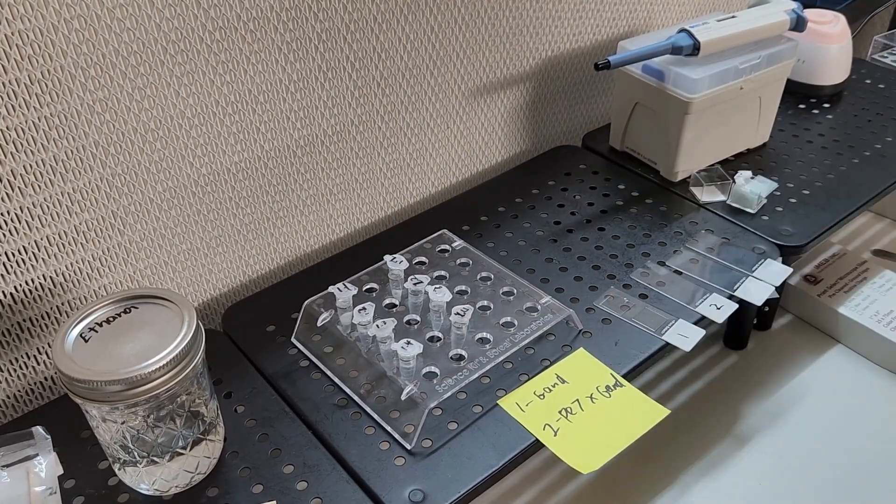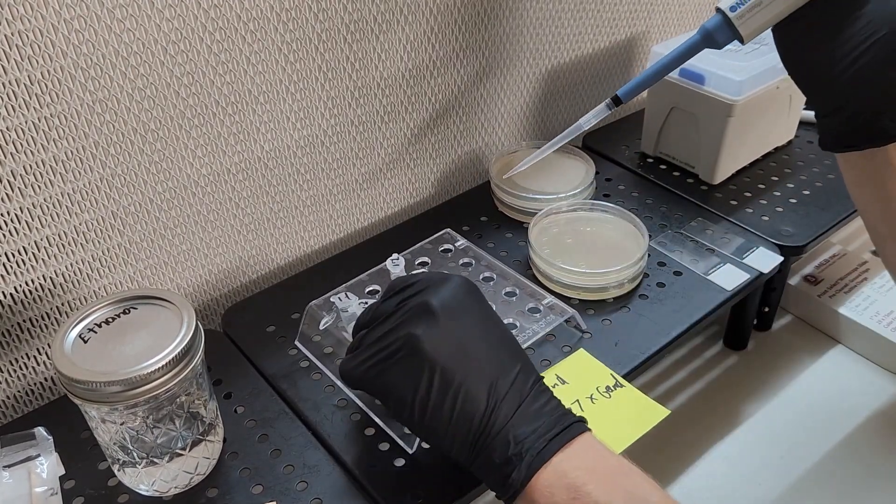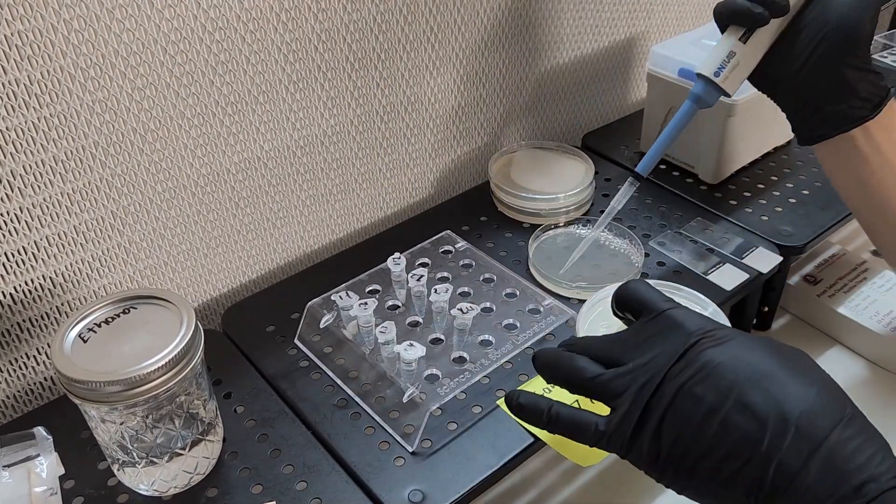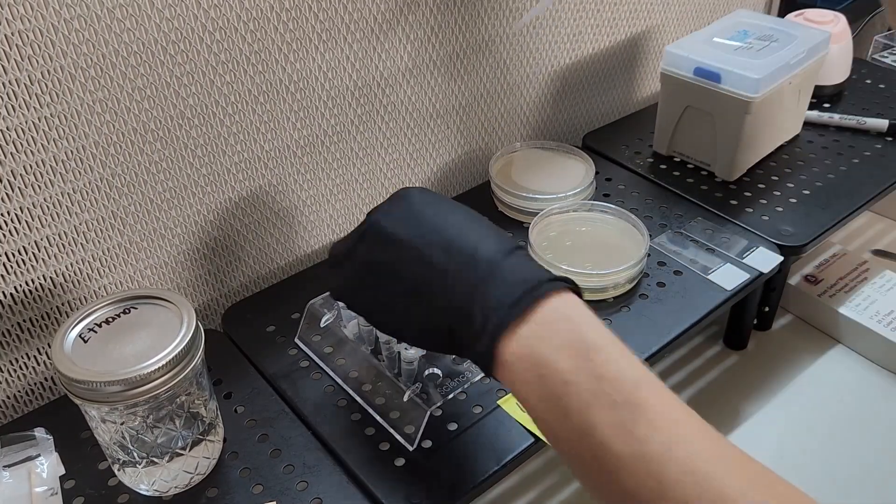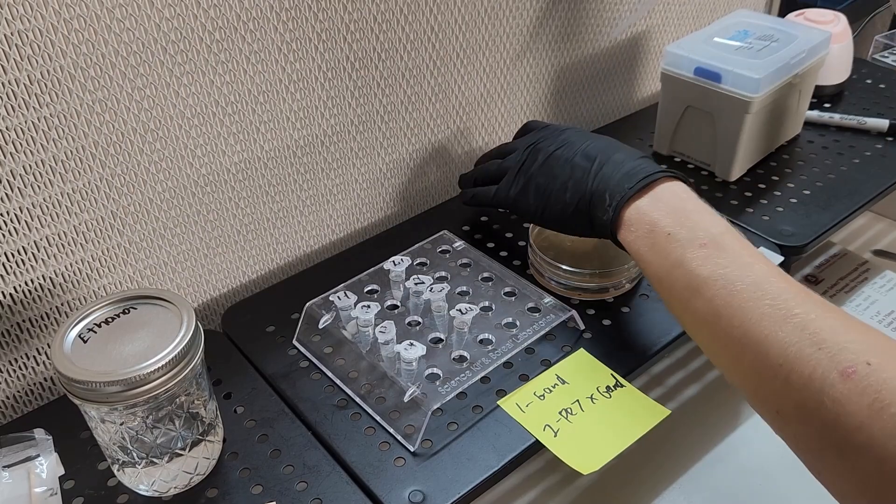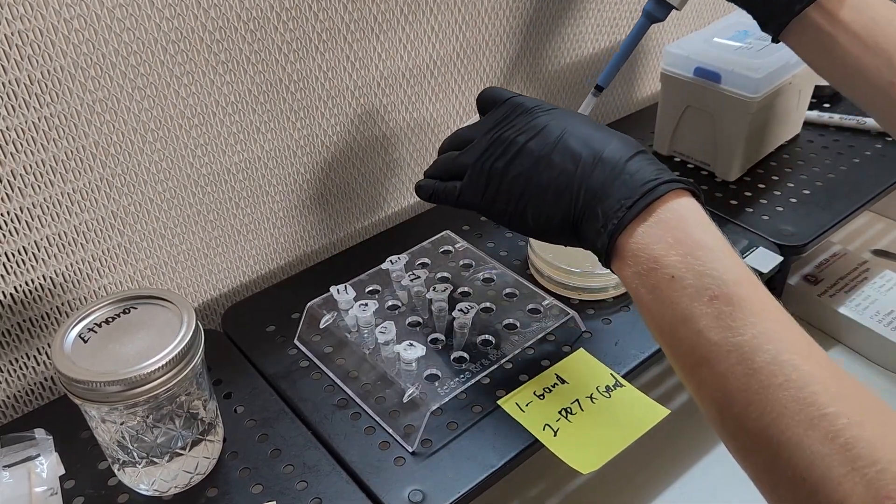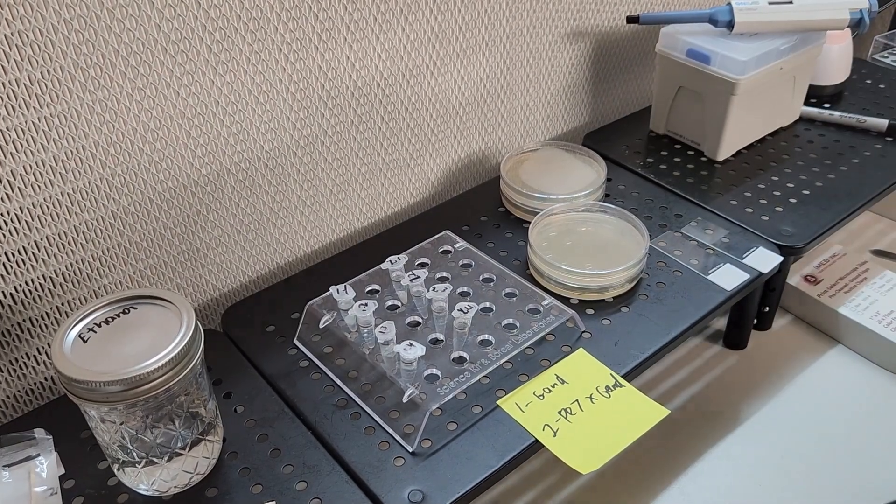Once you figure out which microcentrifuge tube has the right dilution of spores that you wish to use, simply take a drop from that tube and place it onto a plate. We are going to spread this drop across the surface of the plate in order to help ensure that the spores are evenly spread out and are not touching each other.